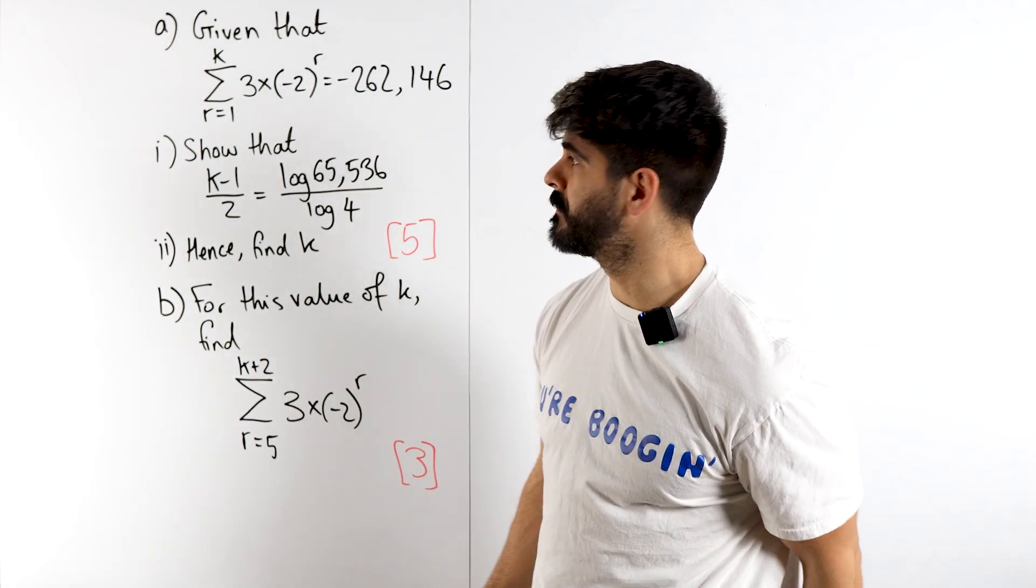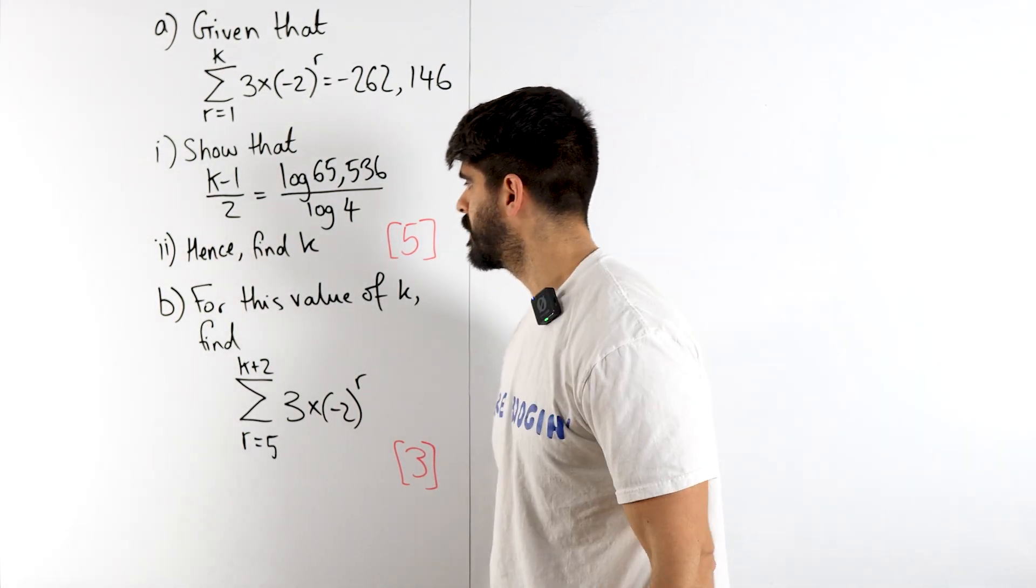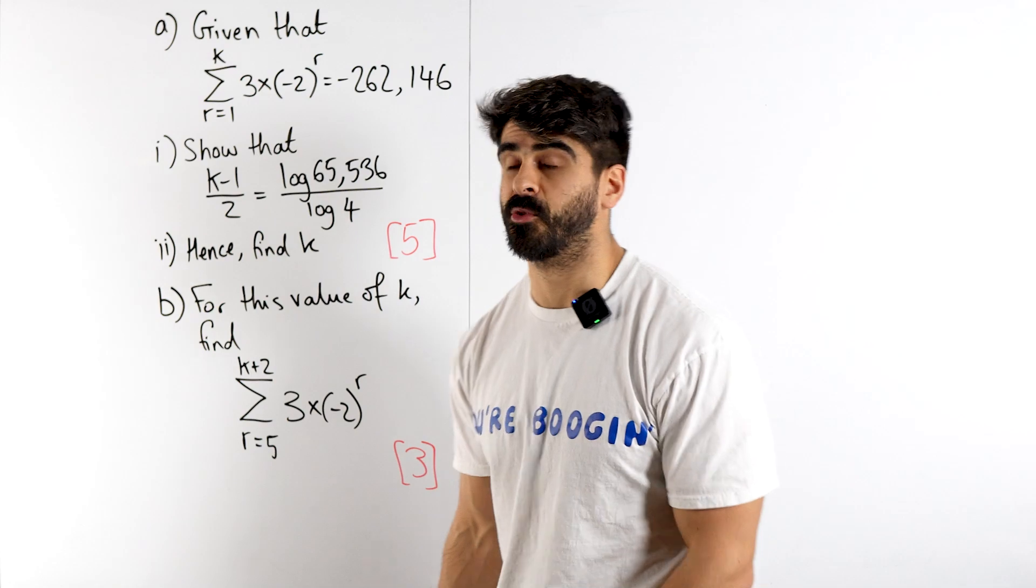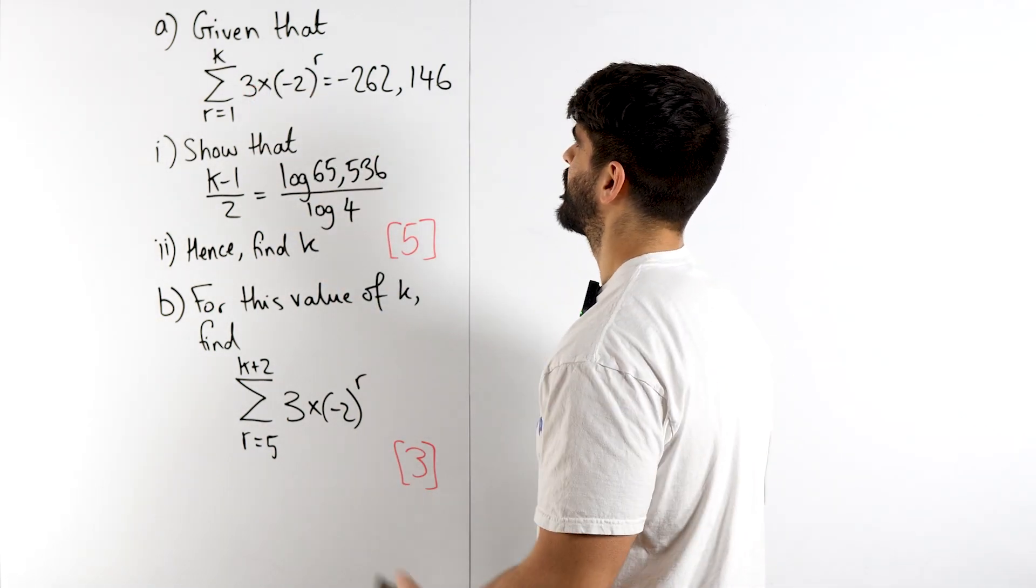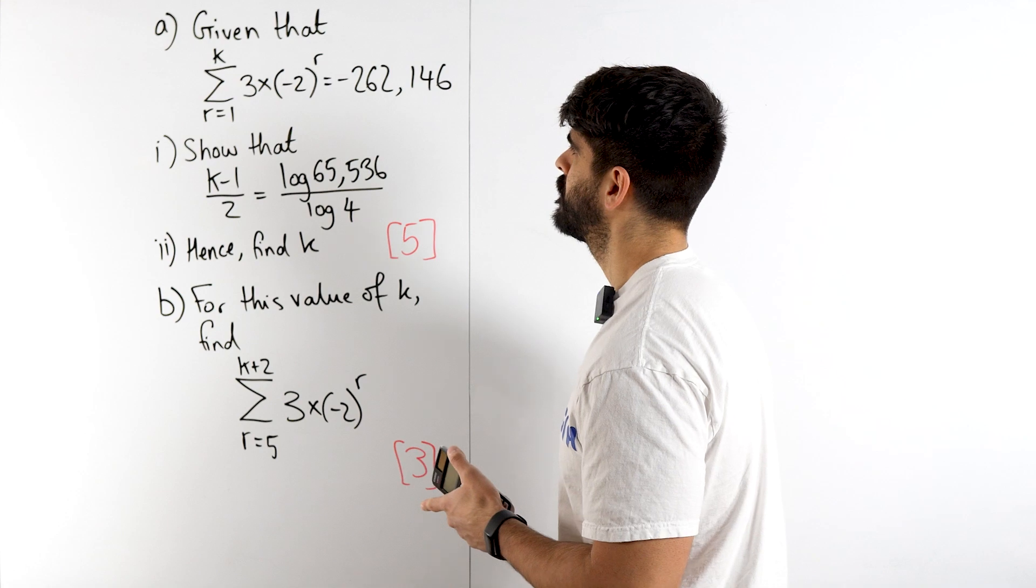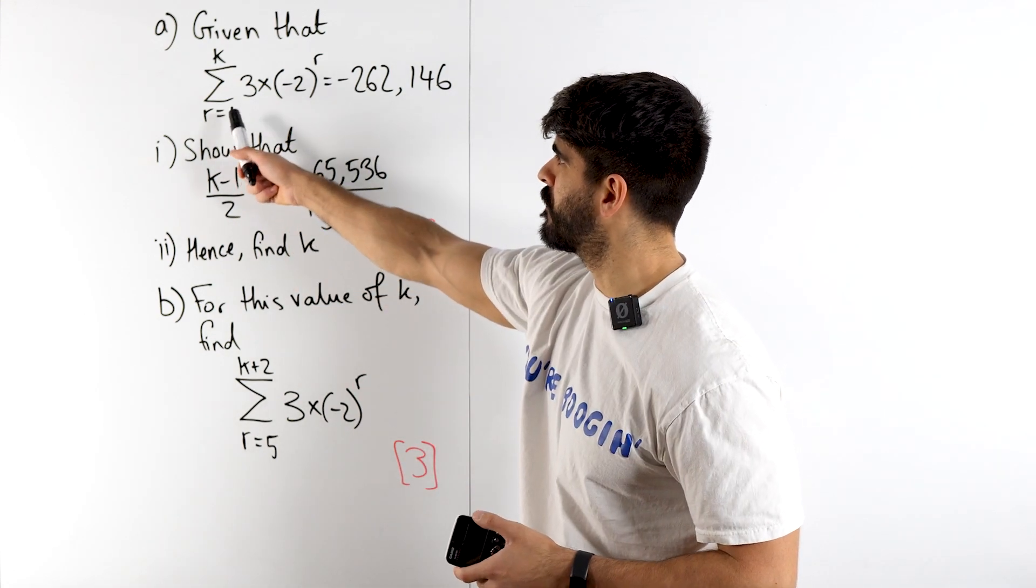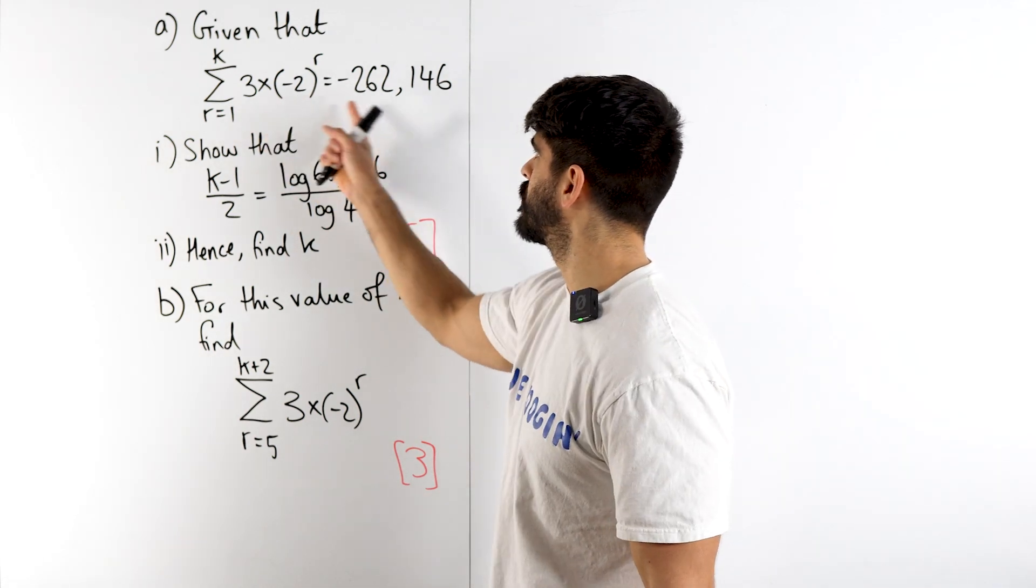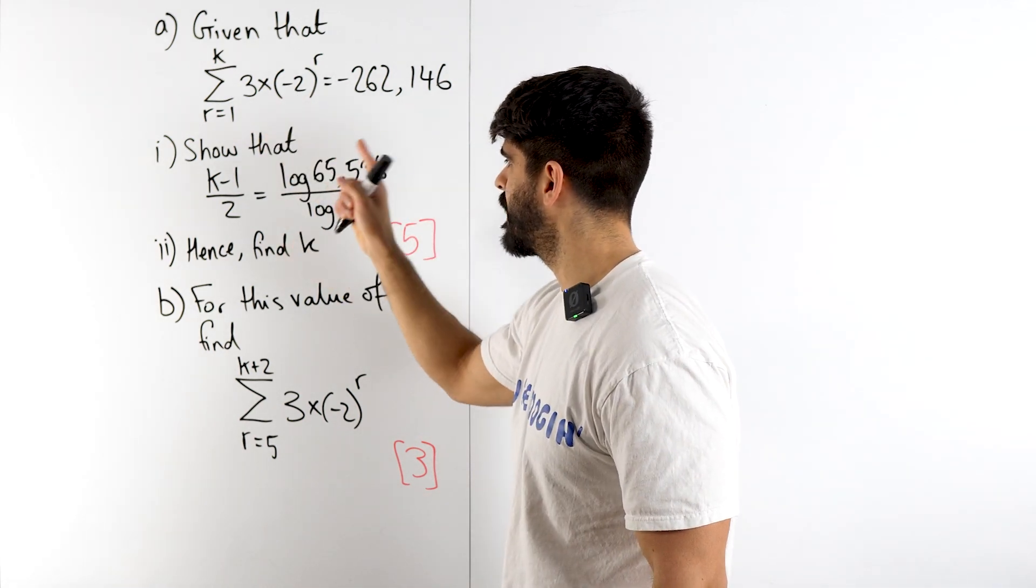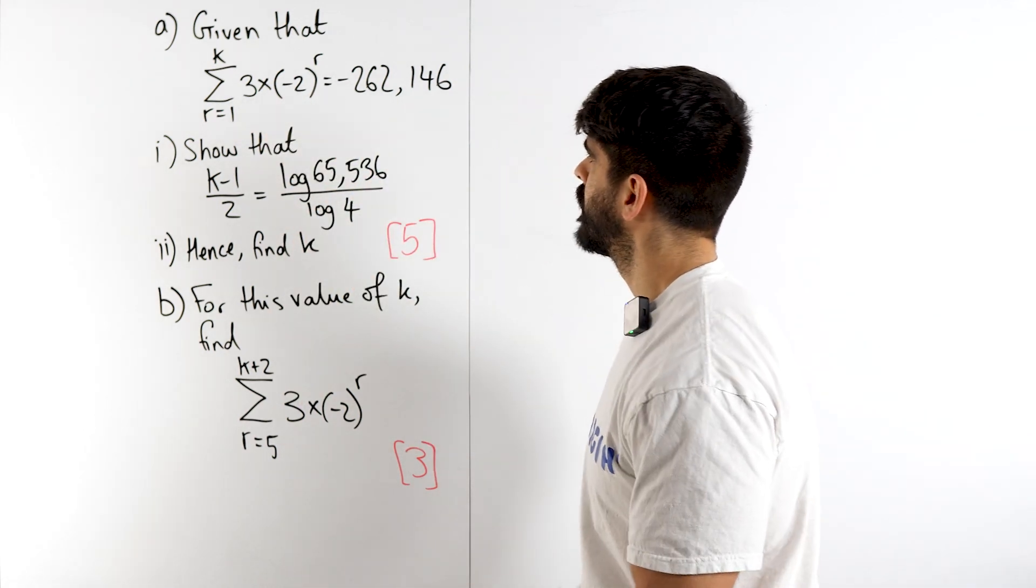Sigma notation. Let's take a look at a tricky question to do with sums, with sigma notation. So it says, given that the sum from r equals 1, the first term, to some unknown term k of this sequence is this number, show that this is true.